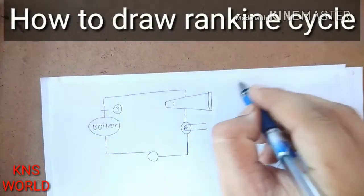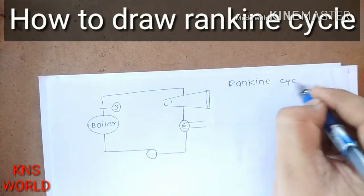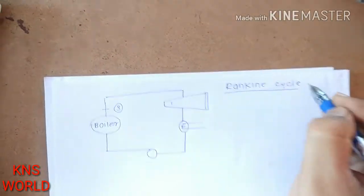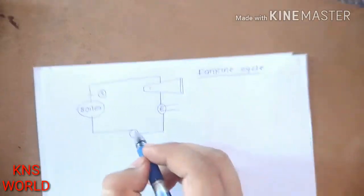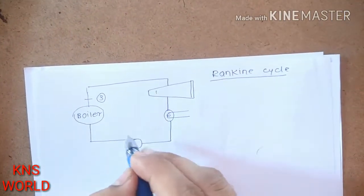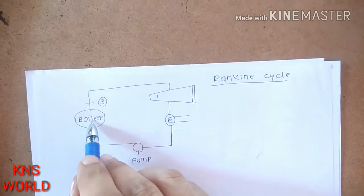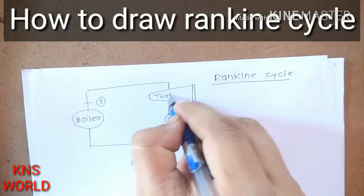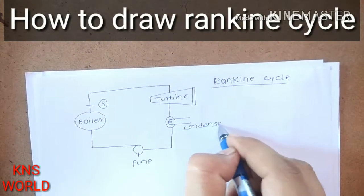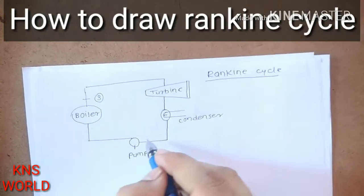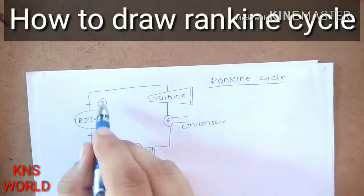We are studying the Rankine cycle — this is the most important cycle because it is used in the real world. The diagram components are: pump, boiler, turbine, and condenser. The process starts at the first point, then the second point, the third point, and the fourth point.